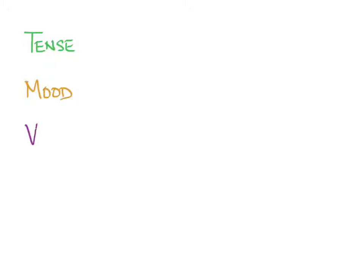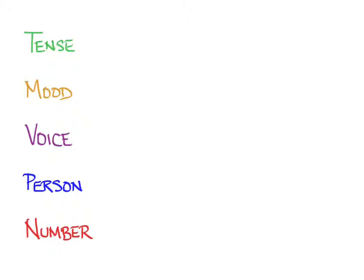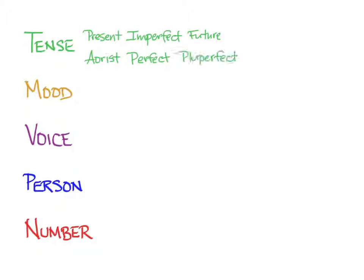When you first learned about Greek verbs back in Unit 2, we talked about how we look at five things in a verb form: tense, mood, voice, person, and number. As a review, Greek regularly uses six different tenses: present, imperfect, future, aorist, perfect, and pluperfect.